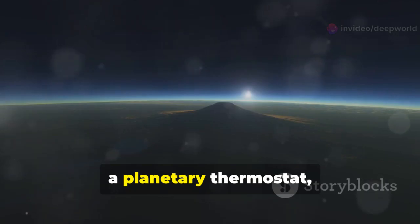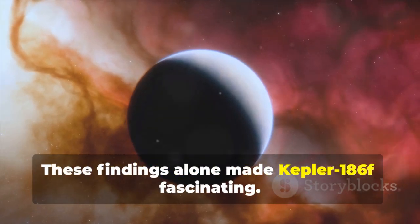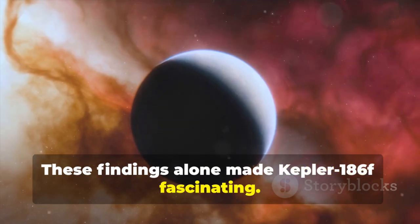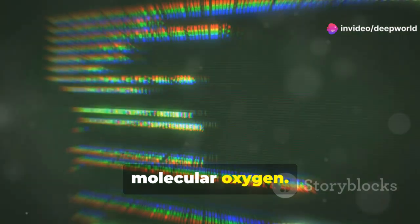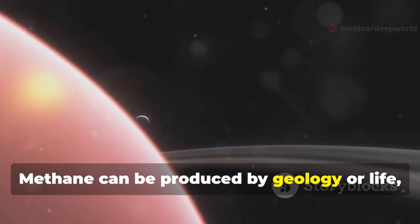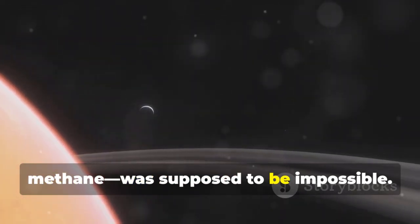Carbon dioxide, a planetary thermostat, was also present. These findings alone made Kepler-186f fascinating. But then came the surprises: strong signals for methane and most shockingly, molecular oxygen. Methane can be produced by geology or life, but oxygen, especially alongside methane, was supposed to be impossible.